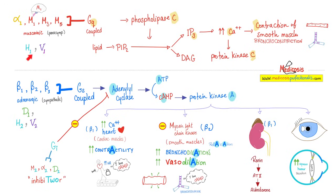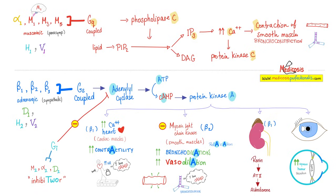Histamine receptors include H1 and H2. H1 is GQ coupled, while H2 is GS coupled. Therefore, H1 → GQ → phospholipase C → IP3. The third number corresponds to the third letter in the alphabet. Then calcium causes contraction of smooth muscles, and that's why histamine causes bronchoconstriction.